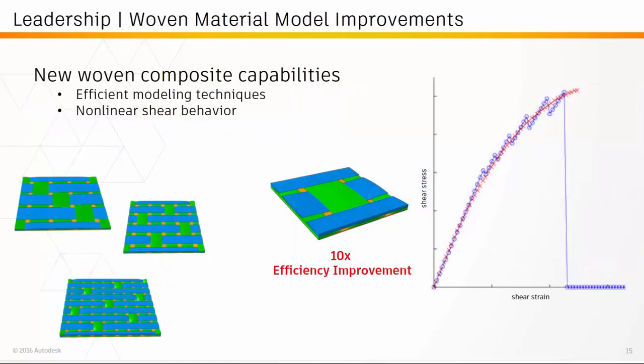We've also added new capabilities for woven material models within Helios PFA. We've increased the efficiency of our micromechanics models — we're now able to simulate four, five, and eight harness satin materials on the fly within Helios PFA, which means that characterizing and utilizing woven materials is now even easier due to these efficiency improvements. We've also included nonlinear shear behavior for woven composites, which have a very large dependency on nonlinear shear.